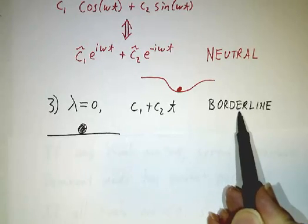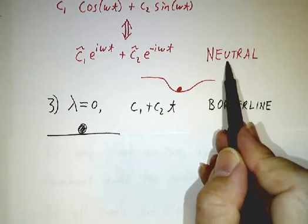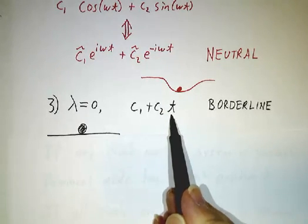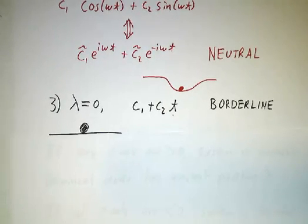It doesn't speed up and it doesn't slow down and its position is a constant plus a constant times t. We call this borderline, but it's not borderline between stable and unstable. It's borderline between neutral and unstable. It actually does grow. It just doesn't grow exponentially. It grows merely as t to the first power.